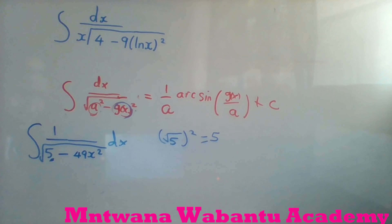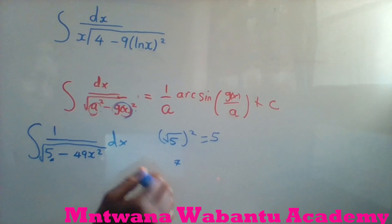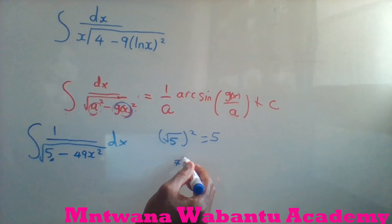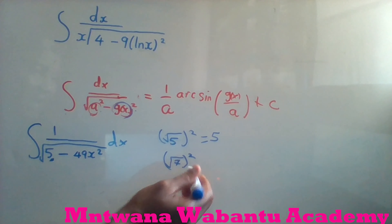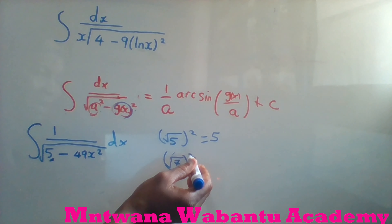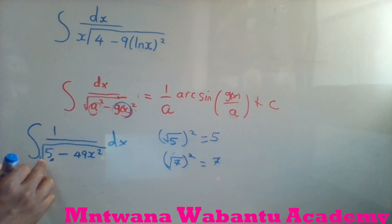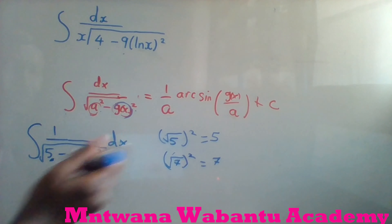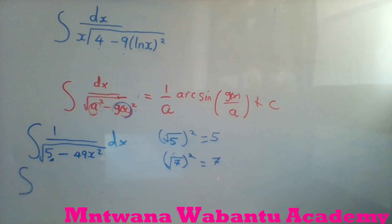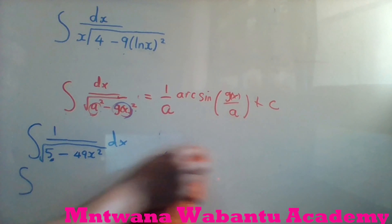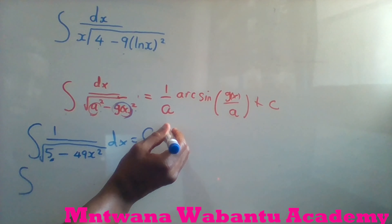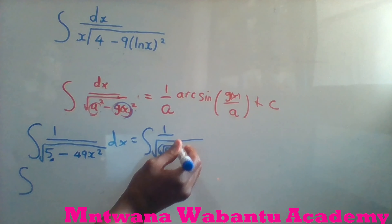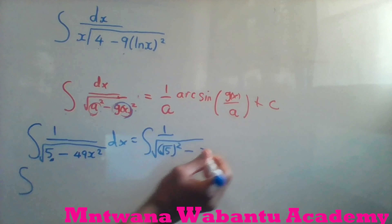If you have a number like 5 or 7 that isn't a perfect square, you write it as (√5)² or (√7)² — because the square and square root cancel each other, the value doesn't change. So I'm going to rewrite the integral as 1 over the square root of (√5)² minus (7x)², dx — now it matches the standard format.